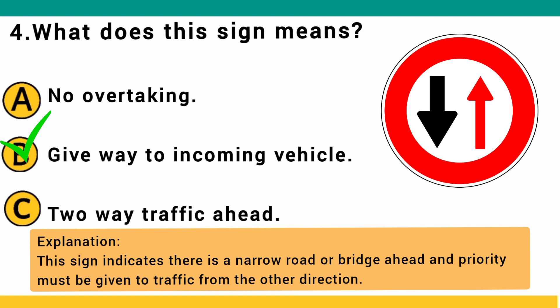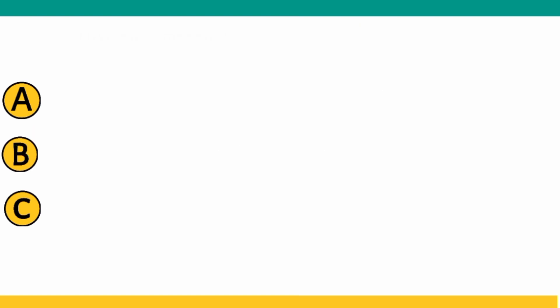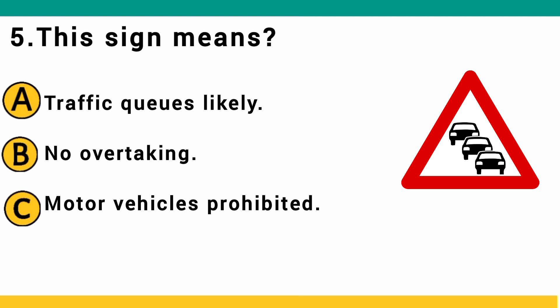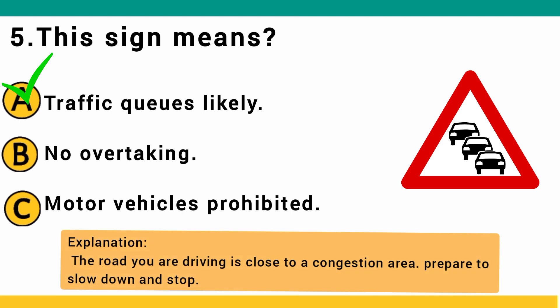This sign means: A) traffic is likely, B) no overtaking, or C) motor vehicles prohibited. The correct answer is A: traffic is likely. The road you are driving is close to a congestion area — prepare to slow down and stop.